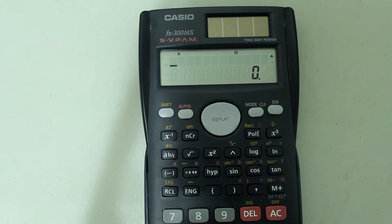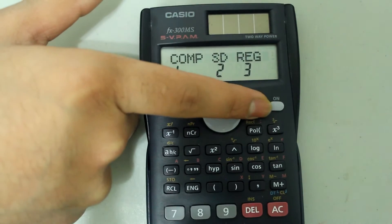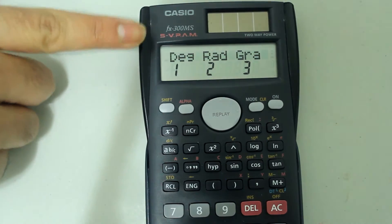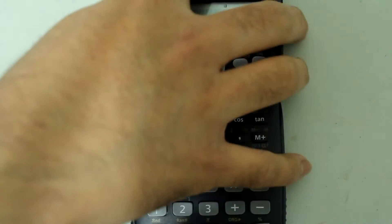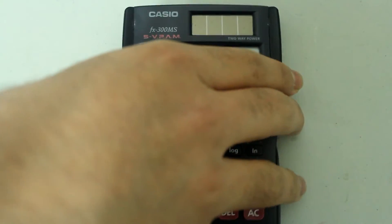Let's say you want to convert 30 degrees to radians. Since you want your end answer to be in radians, you have to be in radian mode. Press the mode button twice until you arrive at this screen. Radian is 2, so we are going to press 2 on the number pad, and now we are in radian mode.